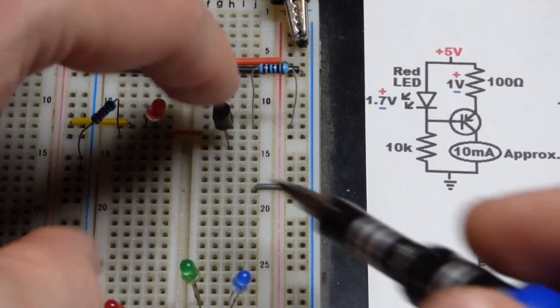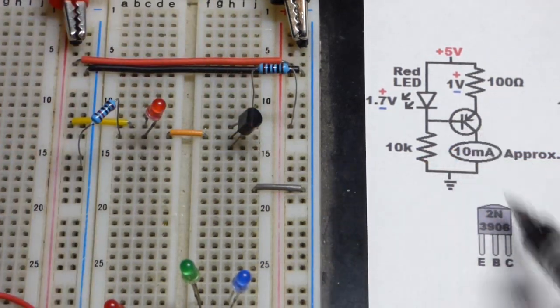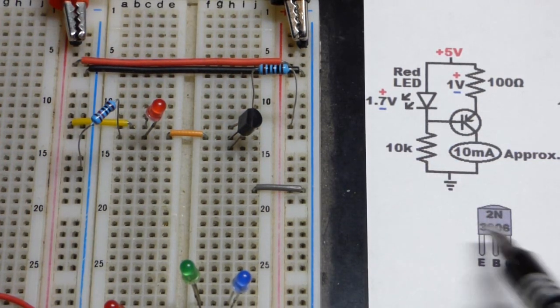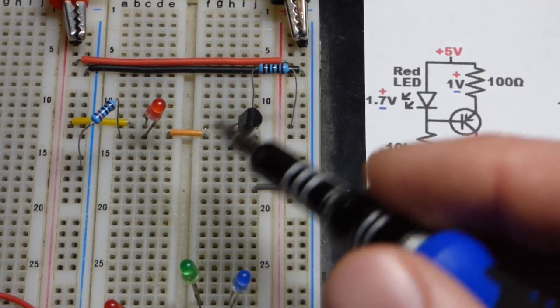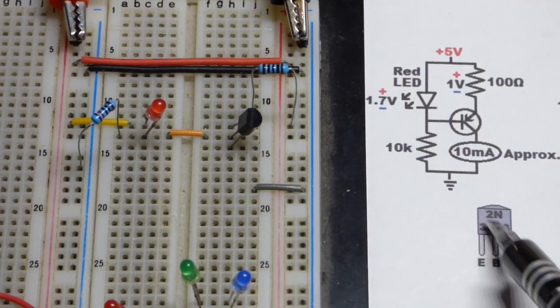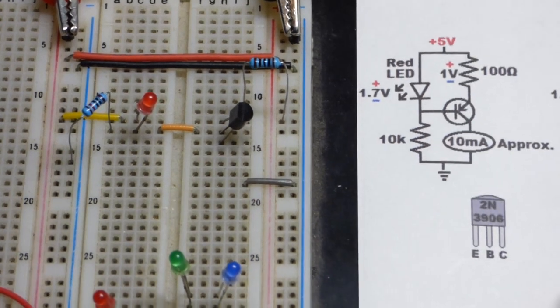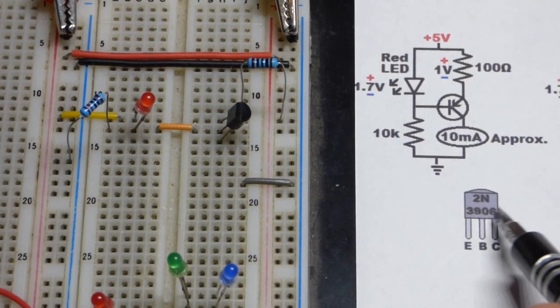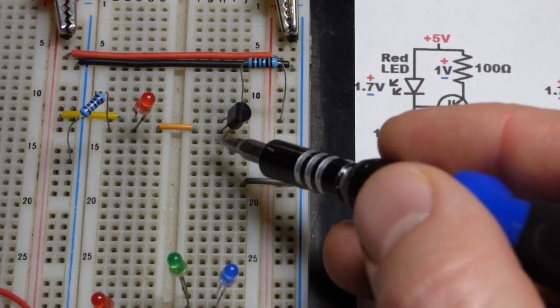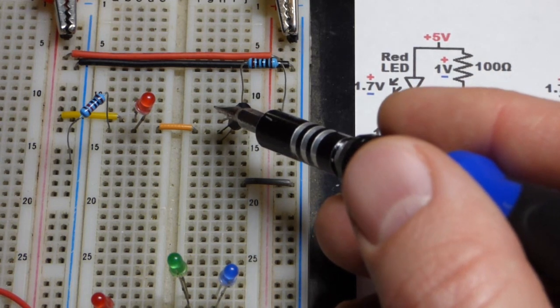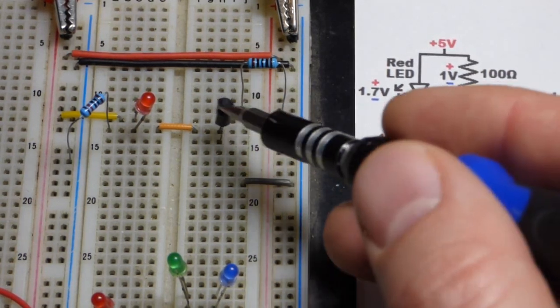But in any case, we have the flat side to the left right there, PNP bipolar junction transistor. And different transistors have different pin layouts. But if it starts with 2N, it's a PNP bipolar junction transistor, then probably the right pin will be collector. Now it's at the bottom. Middle pin base. And then the left pin, which is at the top there, is the emitter.